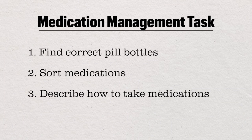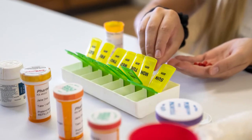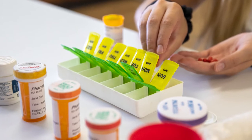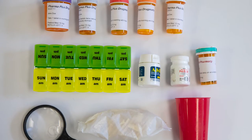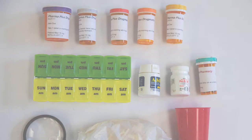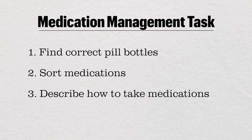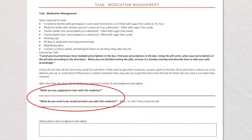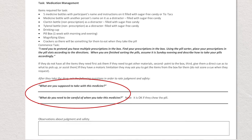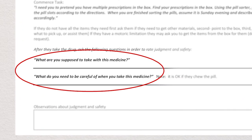The second task following the cooking task is the medication management task. This task requires a three-step process. First, clients need to find their own prescriptions, five in total, while ignoring distractor medications. Second, clients use a weekly pill sorter to sort out their medications correctly according to the directions on the bottle. Finally, clients are instructed to take the Sunday evening medications as per medication directions. If infection control is a concern, clients will instead be asked to describe how they would follow the prescription's instructions to take the medications. Following the task, the clients respond to questions about managing their medications to further evaluate safety and judgment within the task. This question and answer portion is not included in the recorded time, but the responses are recorded by the administrator and will contribute to scoring if the answers require cueing.